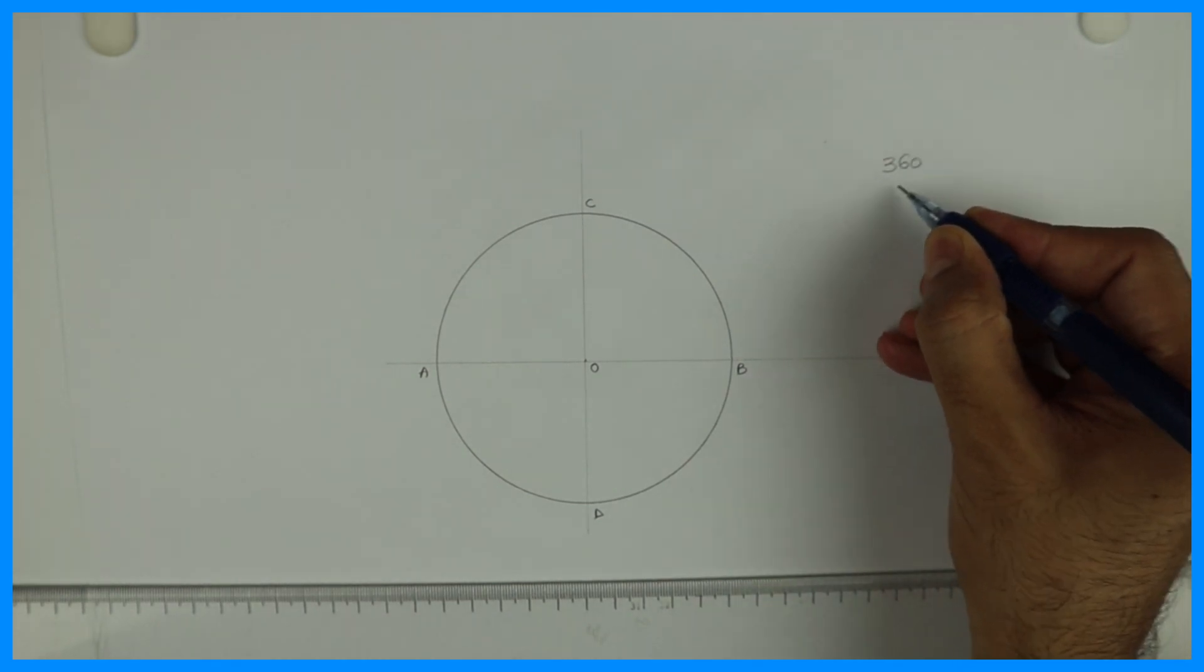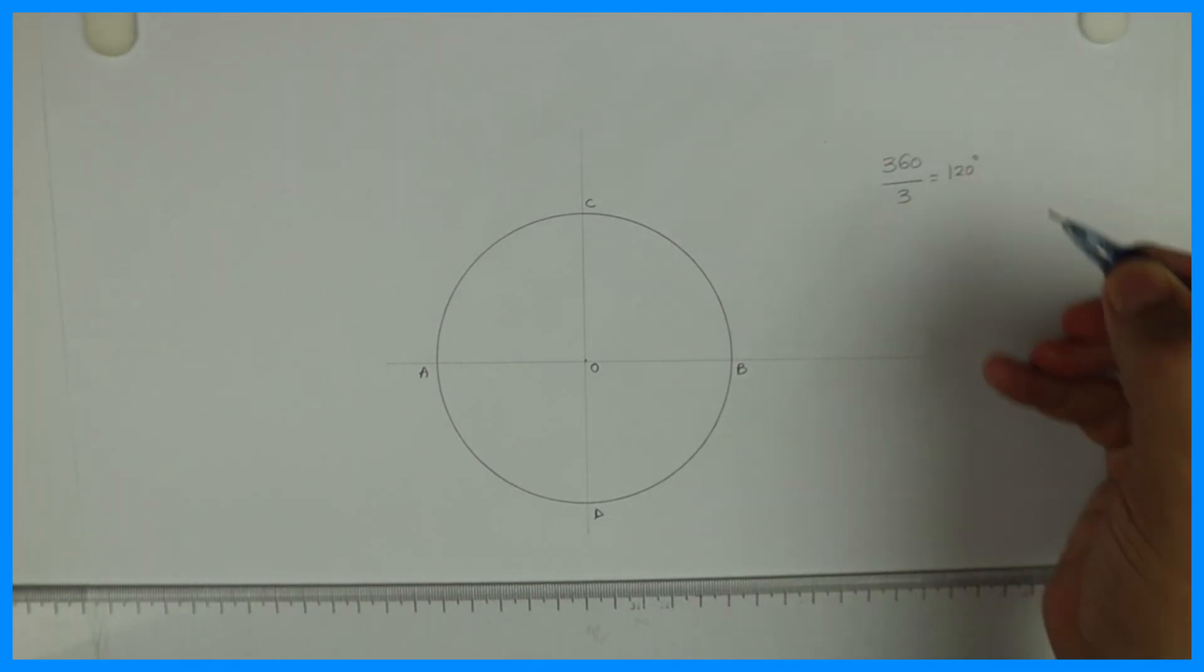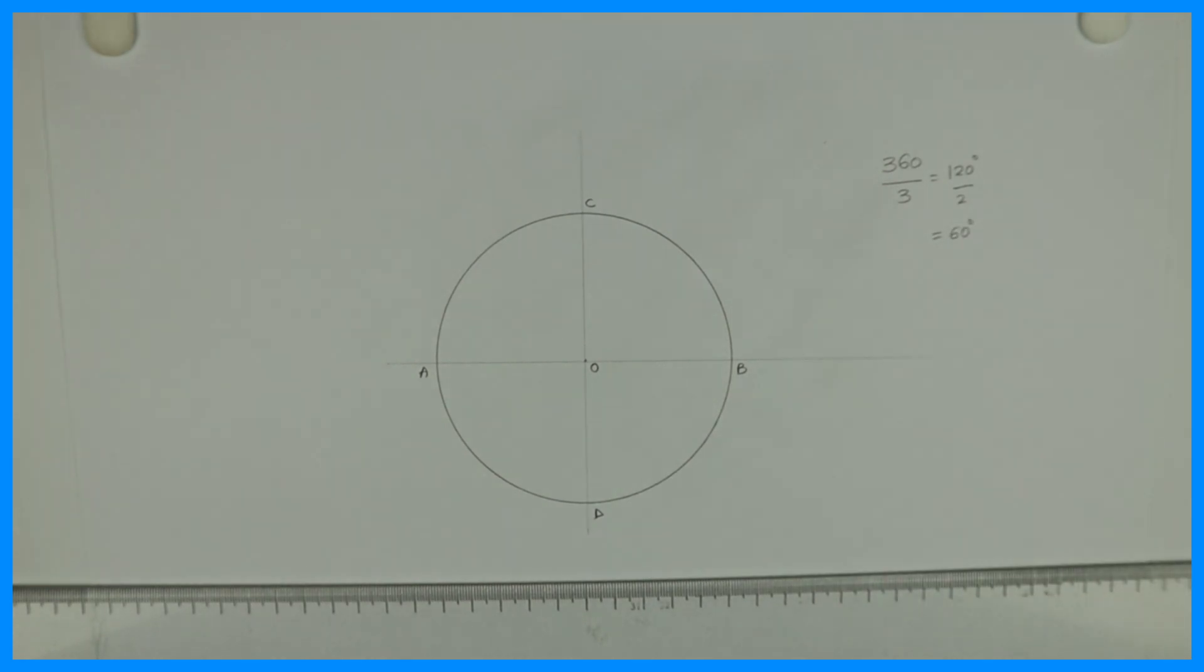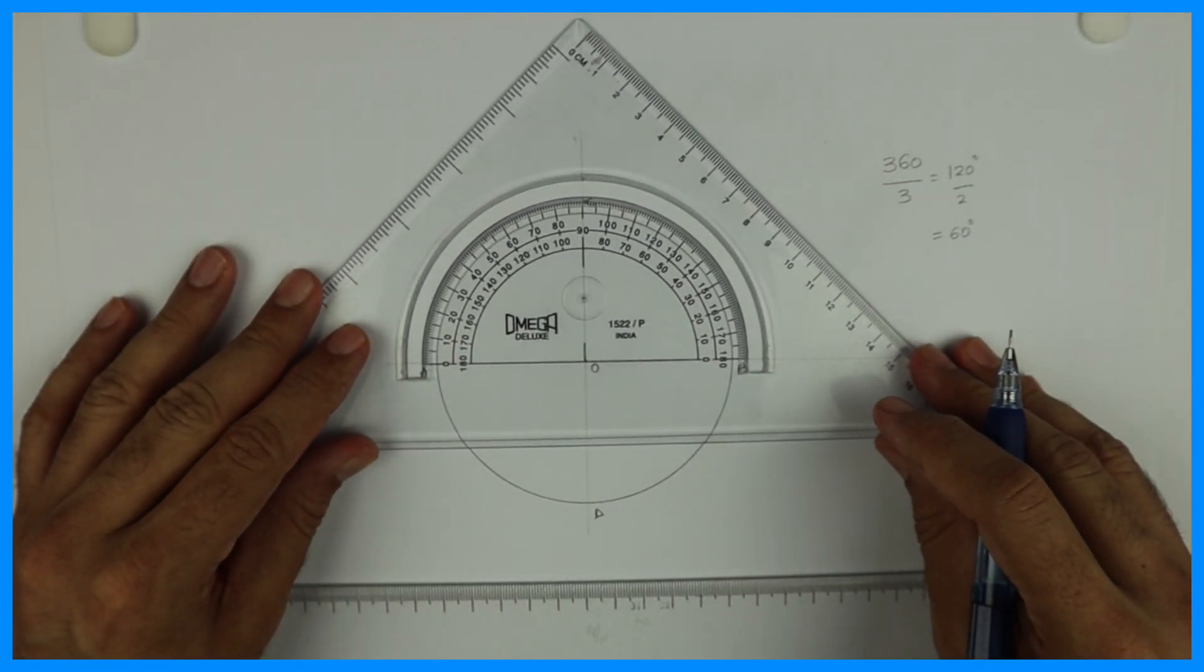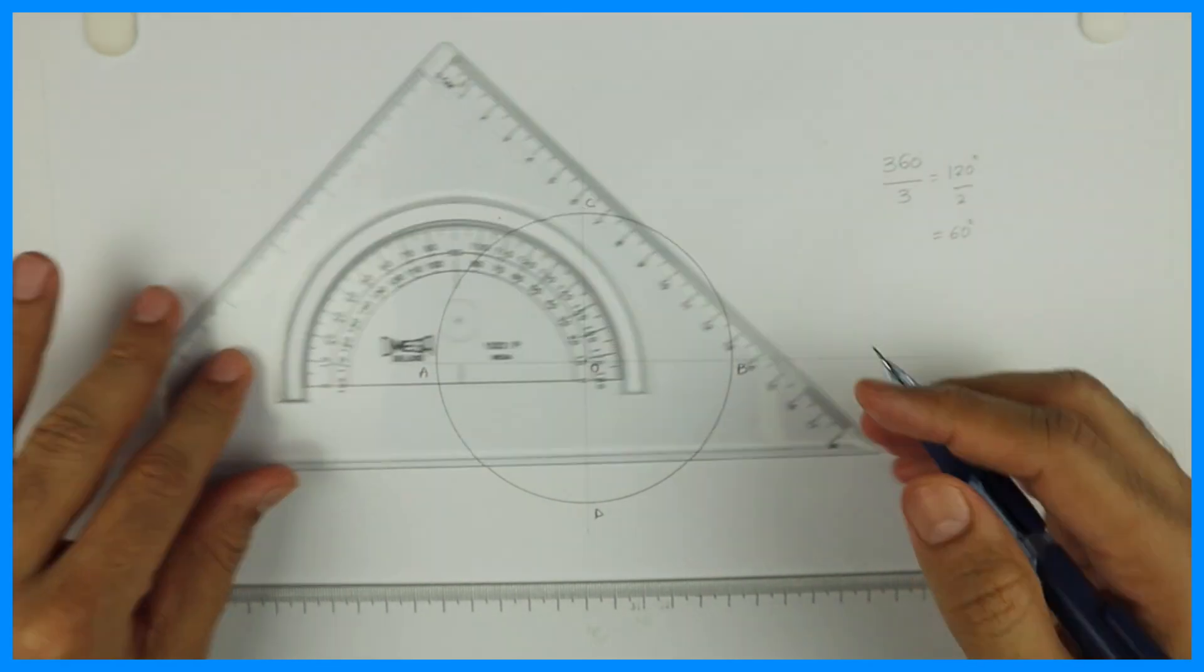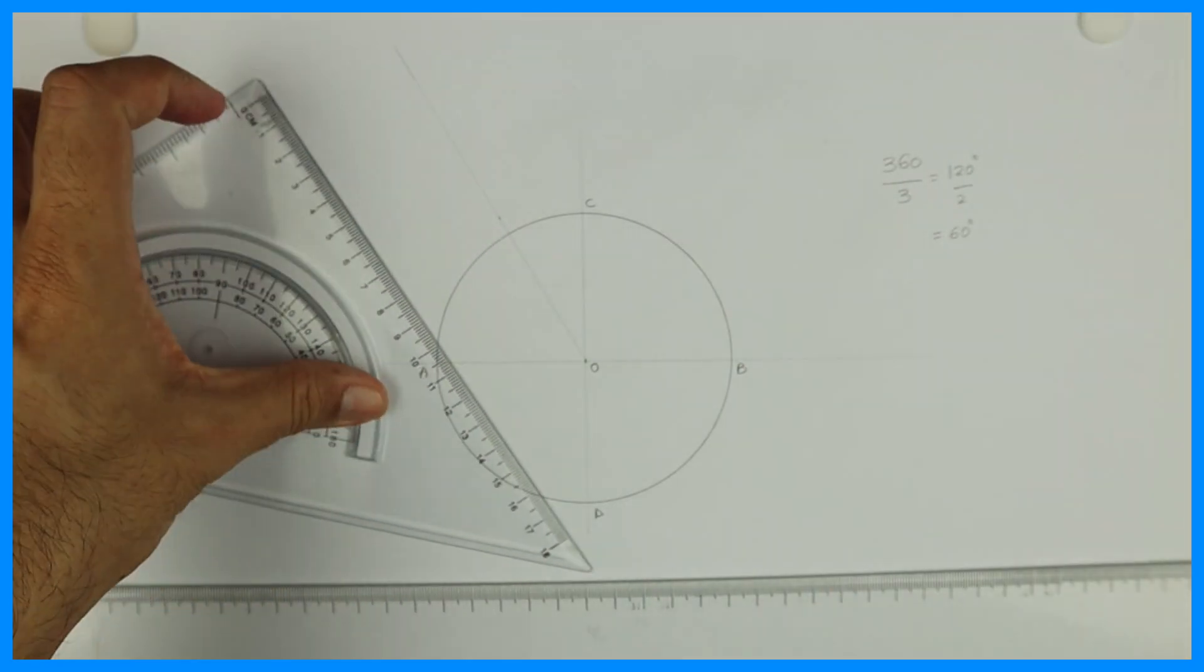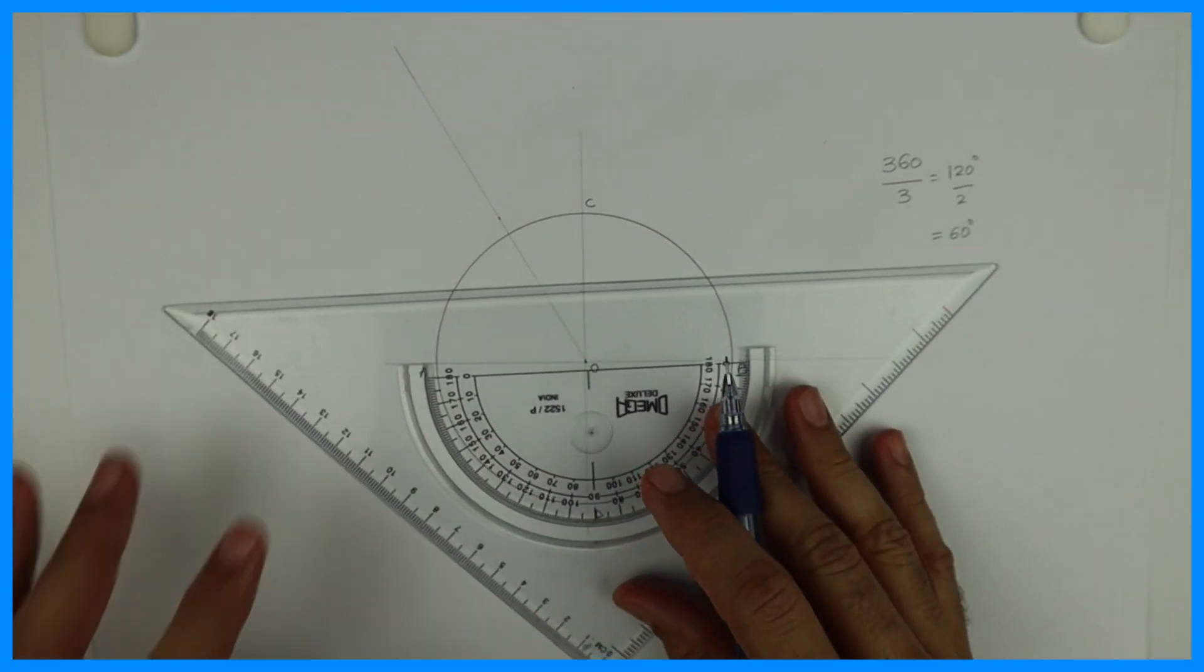Now we need to divide this into three parts because we want to draw three circles. So we'll do 360 divided by 3, which equals 120, divided by 2 would be 60. So you will take 60 up as well as 60 down.